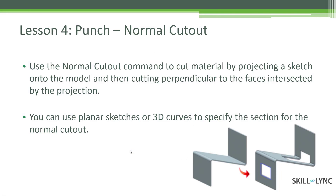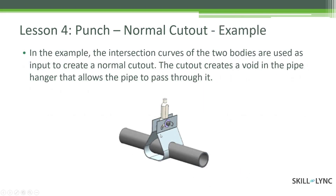Here we have a component with intersecting parts — a holder with a pipe going through it. I need a cutout exactly at the intersection area. What we'll do is get an intersection curve at that location and use that intersection curve to make the cutout on the sheet metal part. We can create a contour flange with this profile, then create a tube, and then make an intersection curve. Using that intersection curve we will make a cutout in this particular part.